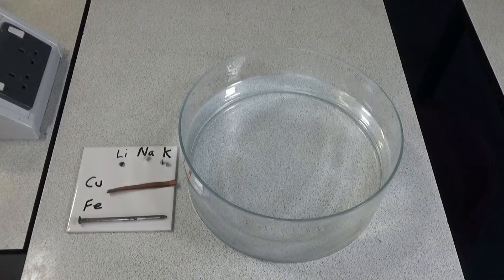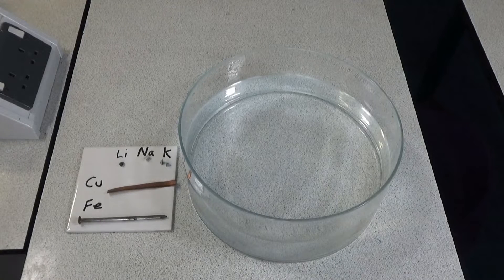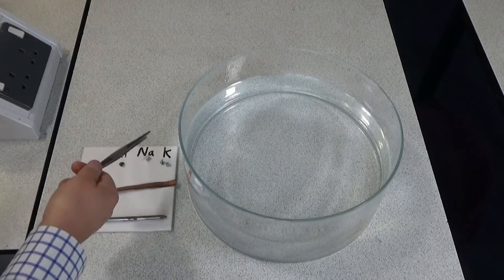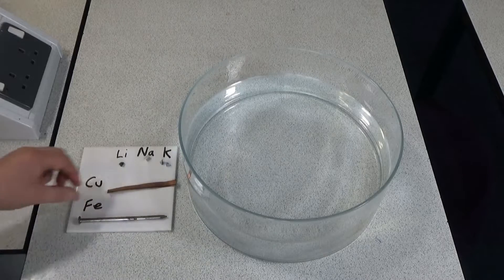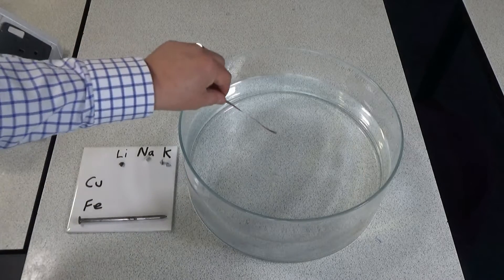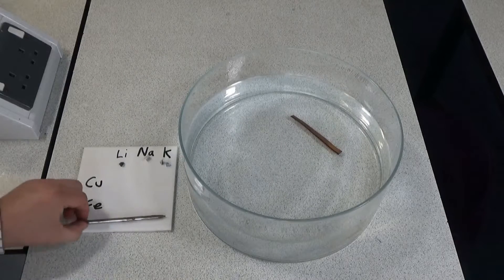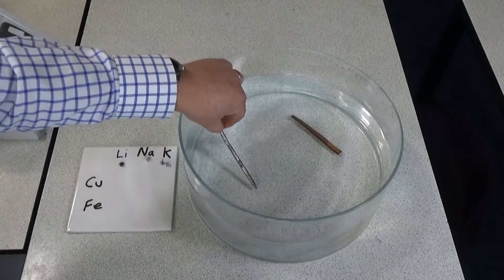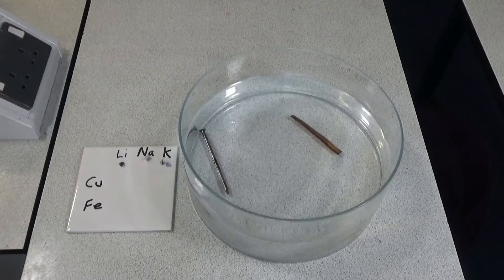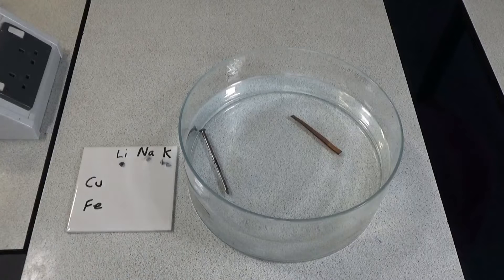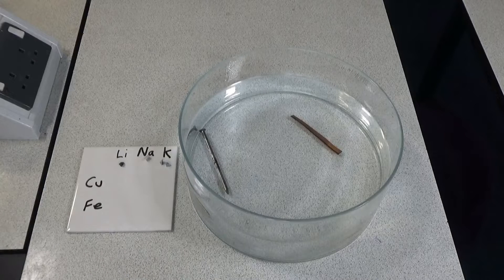We're going to start off by looking at how different metals react with cold water. So we've got some iron, copper, lithium, sodium and potassium. If we start off putting a piece of copper in cold water we see there's no reaction. If we put a piece of iron in the water it doesn't look like there's much of a reaction but if we came back to it after a week it might have started going rusty so really slow reaction.